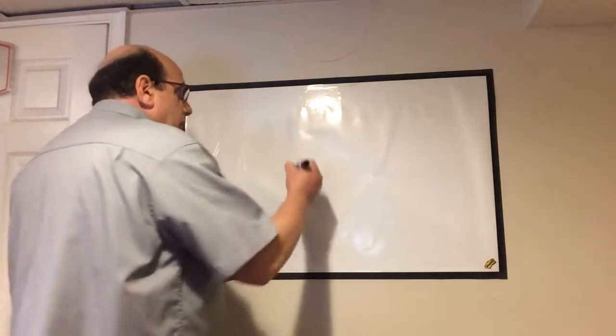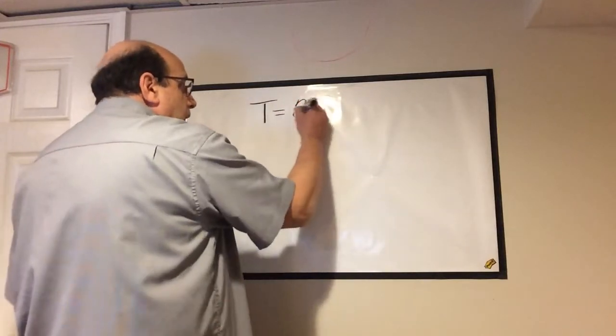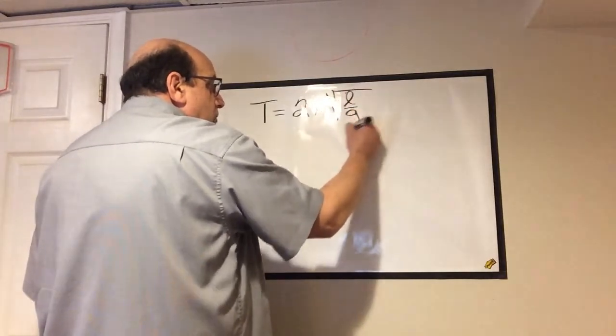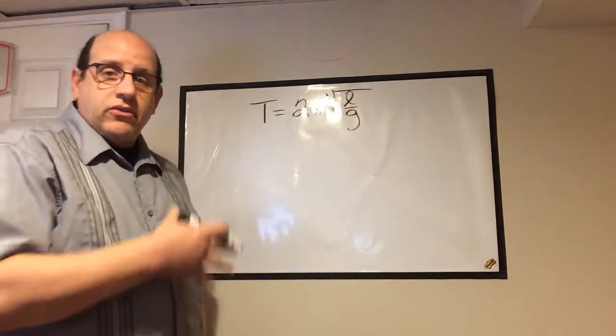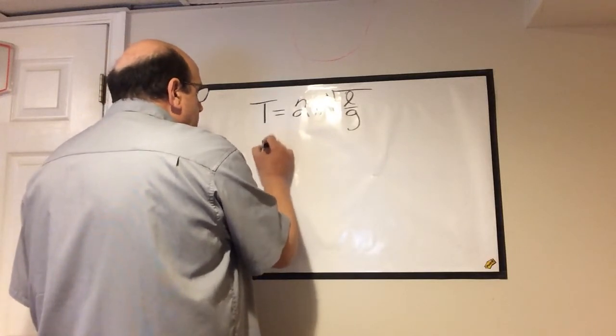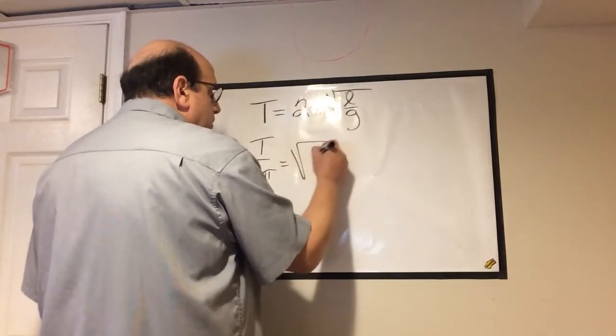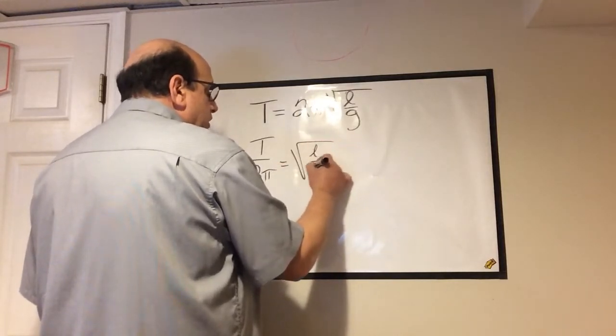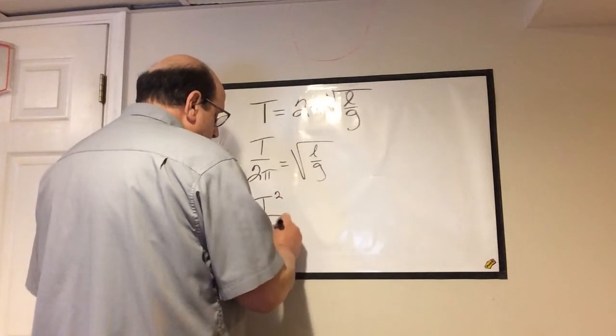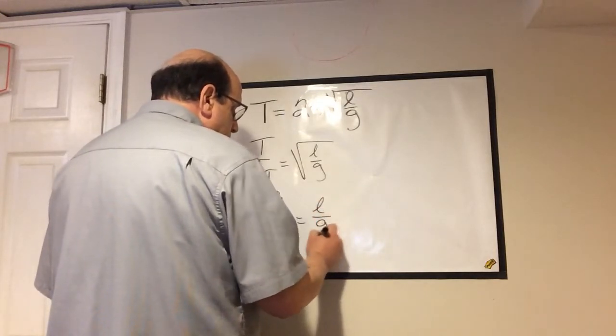What is the time period? Well, the time period is equal to 2π times the square root of the length of the pendulum divided by gravity, and then you solve for gravity. Apparently I have to do this all over again, which is a little frustrating in and of itself. So, time period divided by 2π equals the square root of L over G. And then I'm going to square both sides. So time period squared over 2π squared equals L over G.